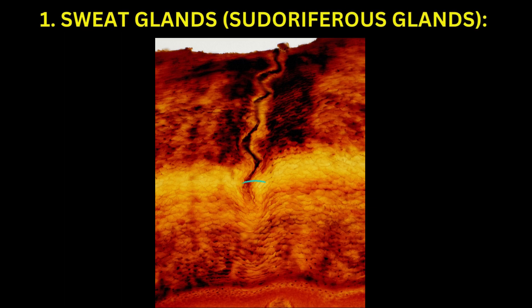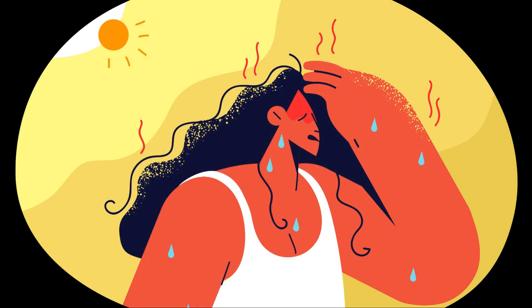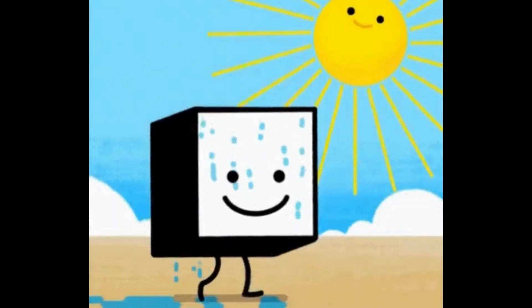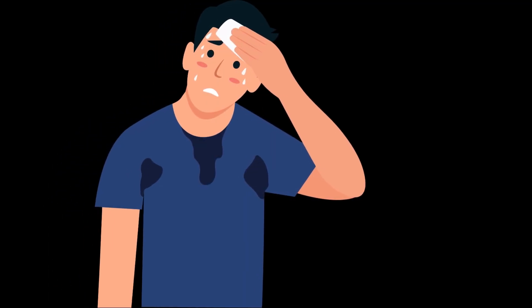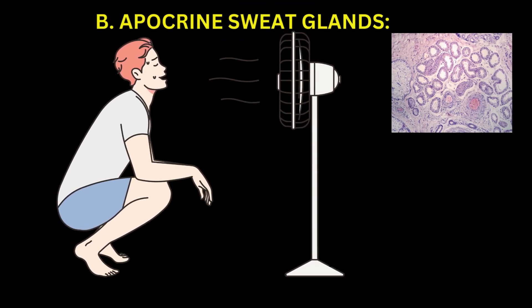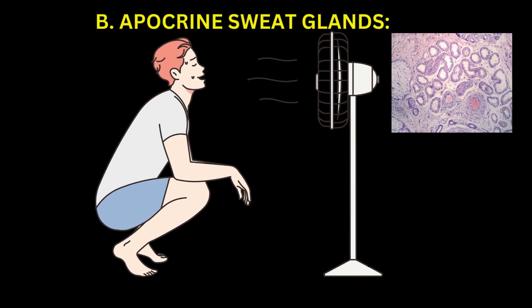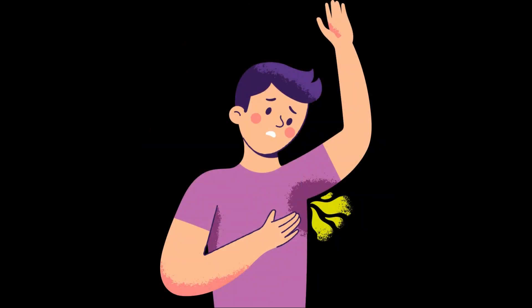1. Sweat glands (sudoriferous glands) are further divided into two types. A. Eccrine sweat glands: widely distributed across the body, responsible for regulating body temperature through the production of watery sweat, which evaporates and cools the skin; most abundant on the palms, soles, and forehead. B. Apocrine sweat glands: found in the axillary (armpit) and anogenital regions, become active during puberty and are associated with emotional stress; secrete a thicker, milky sweat that is broken down by bacteria, leading to body odor.